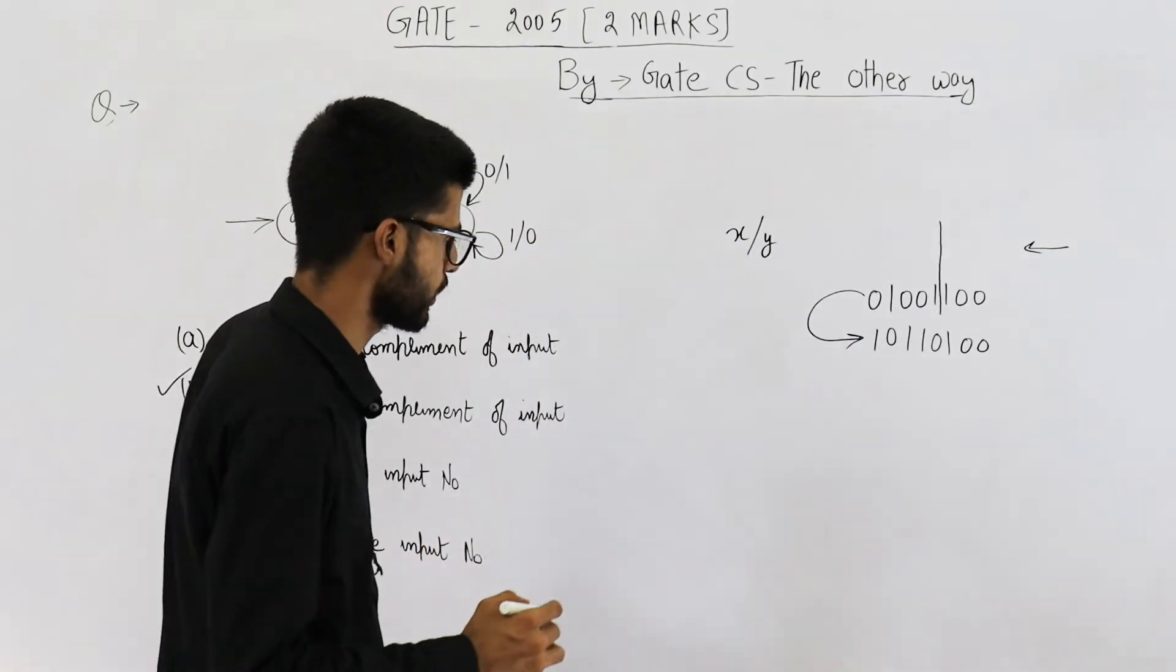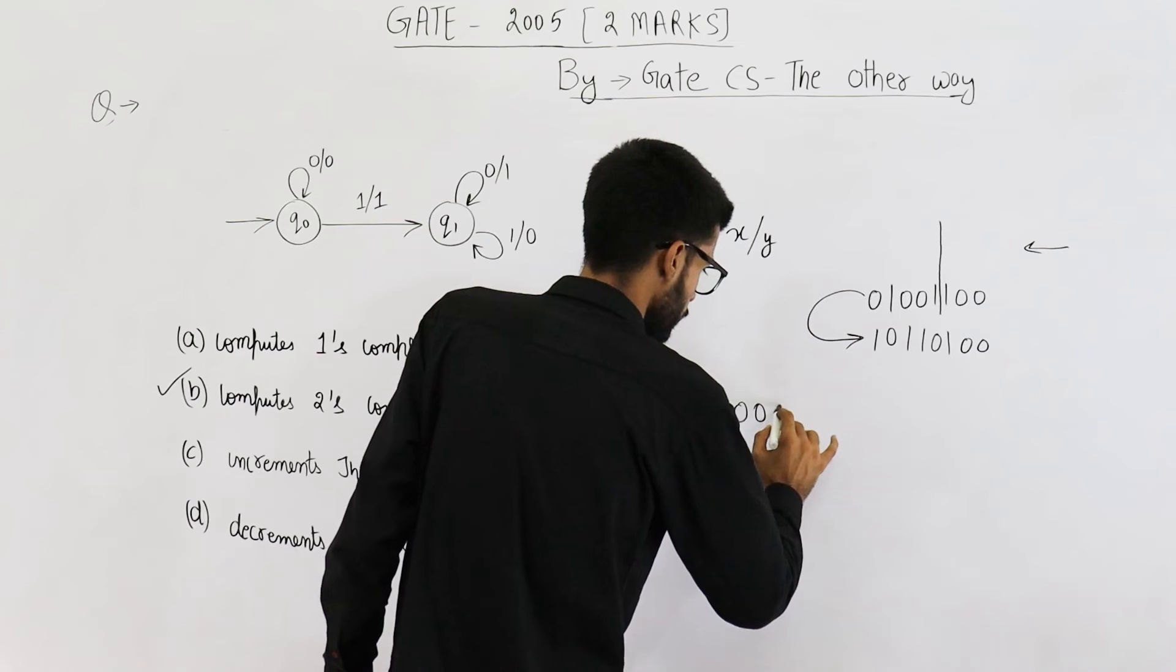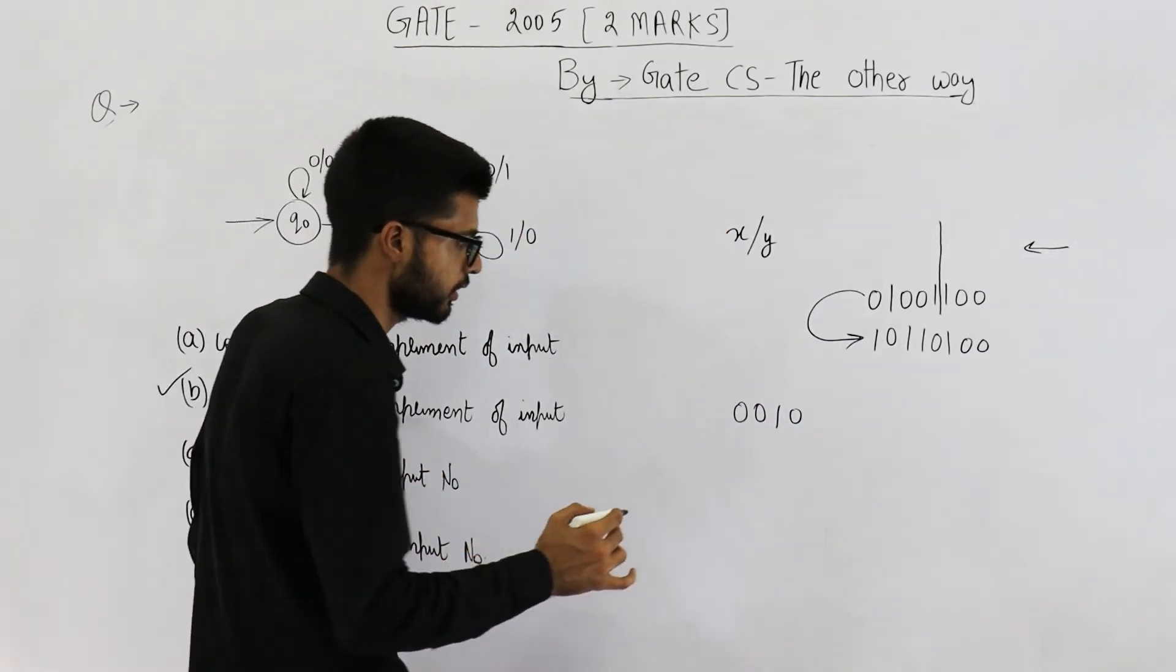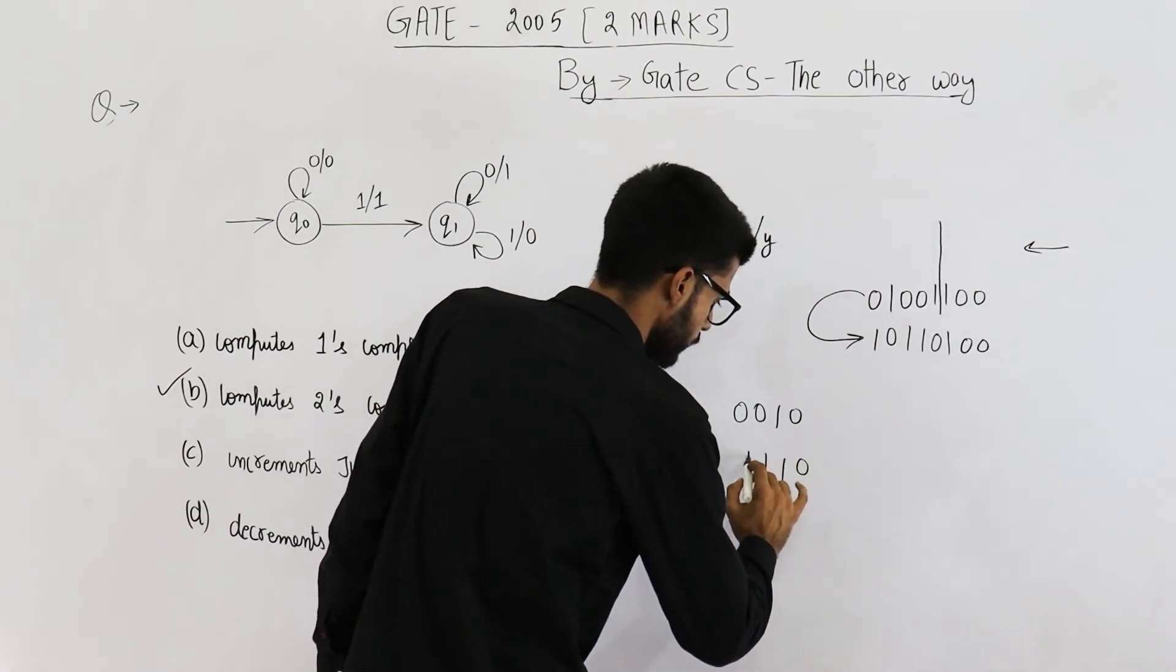Let us see one more example. 0, 0, 1, 0. For this bit, for this string, the output will be 0, 1, 1, 1.